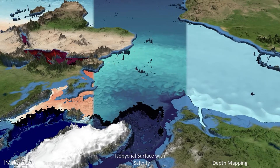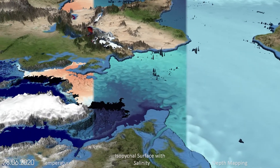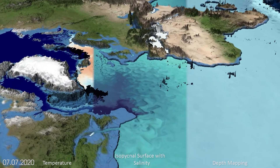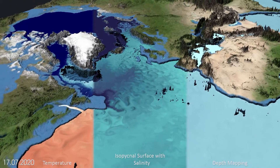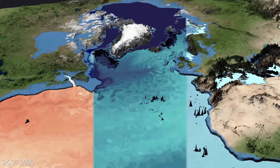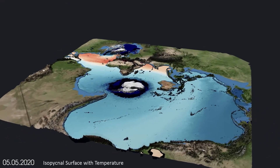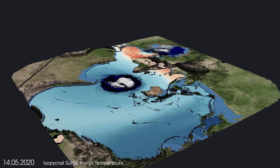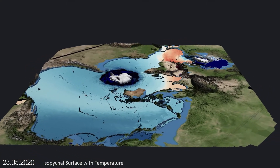The isopycnal surfaces can crop out at the ocean surface, as can be seen in the Labrador Sea. Here the ocean interior is directly in contact with the overlying atmosphere, and water masses such as the Labrador Sea water are formed. We see a re-stratification of the Labrador Sea following the strong and deep vertical mixing and homogenization in the boreal winter. Similarly, we also observe an outcropping of the isopycnals around Antarctica, where the Antarctic Intermediate Water is formed.